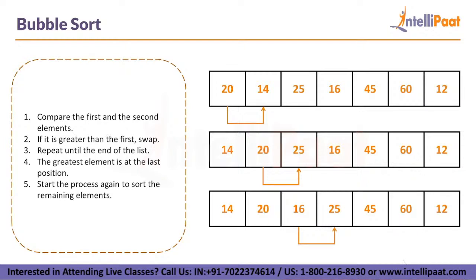Let's discuss bubble sort. We follow the following steps to implement the bubble sort algorithm. The process starts with comparing the first element from the list to the next element. If the element is smaller or greater than the first element, we swap the two elements. We repeat this process until the end of the list, and the sorting process will end when all elements have been sorted and placed at their appropriate positions.